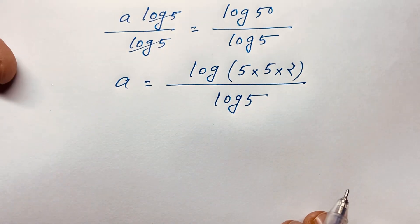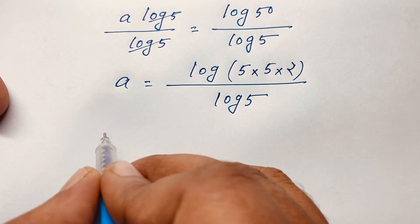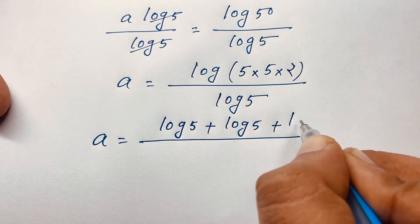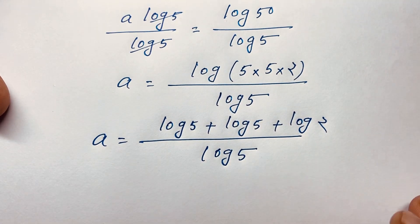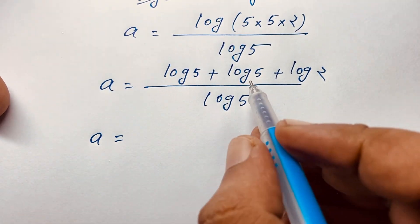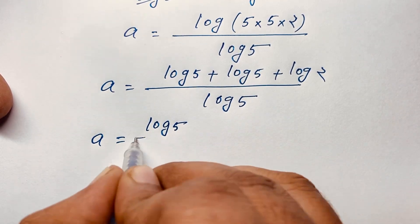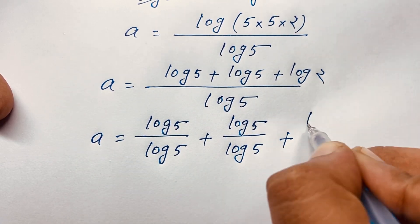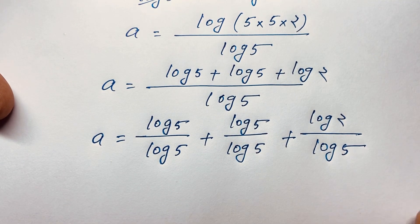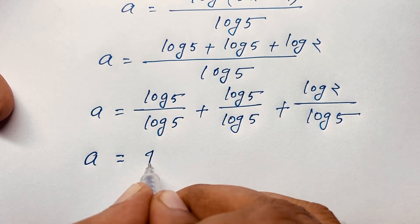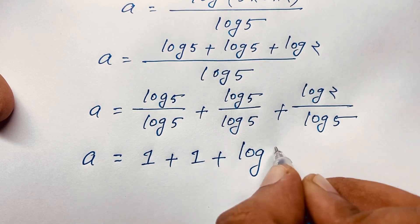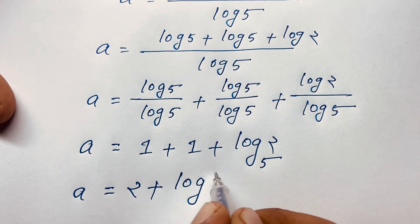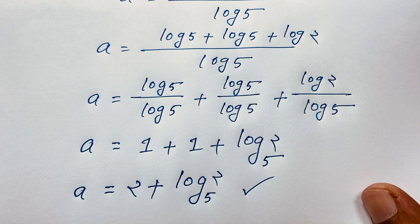Now here is a is equal to log of 5 times 5 times 2, over log 5. If I apply the logarithm rules, I can see here is a equals log 5 plus log 5 plus log 2, over log 5. Now, log 5 over log 5 cancels out, it will be 1 plus 1 plus log 2 base 5. So you can see here is a equals 2 plus log 2 base 5. This is our final answer in this exponential expression.